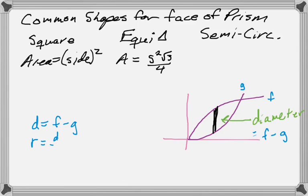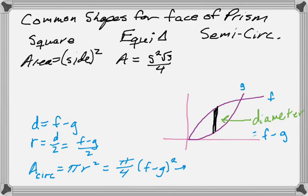So if diameter is f minus g, then the radius is diameter over 2, and then area of a circle is pi r squared, which would give us this by squaring that, and then a semicircle is half of a circle. So we end up with pi over 8, and then f minus g squared.